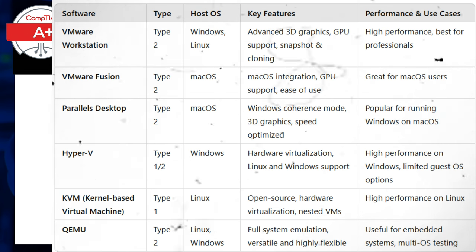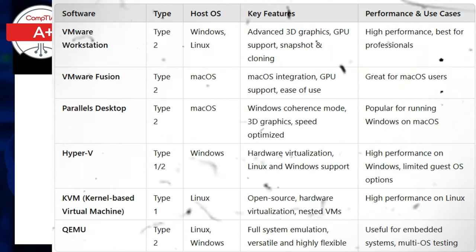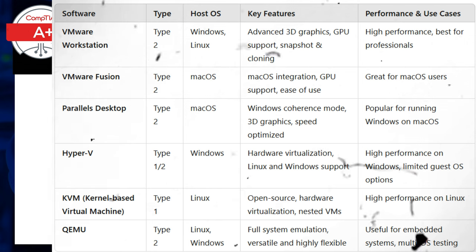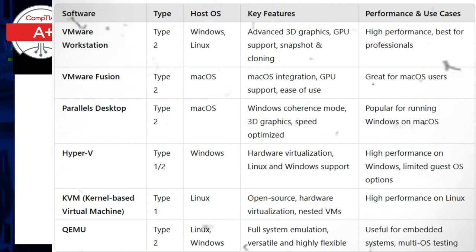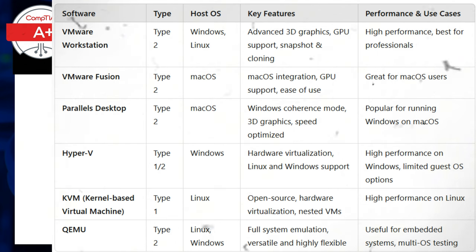KVM, or kernel-based virtual machine, is integrated into Linux and is a highly efficient type 1 hypervisor for Linux users. It is widely used in data centers and cloud environments for its performance and scalability. QEMU is a flexible open-source emulator and virtualizer that, paired with KVM, provides efficient full-system emulation and is highly customizable.